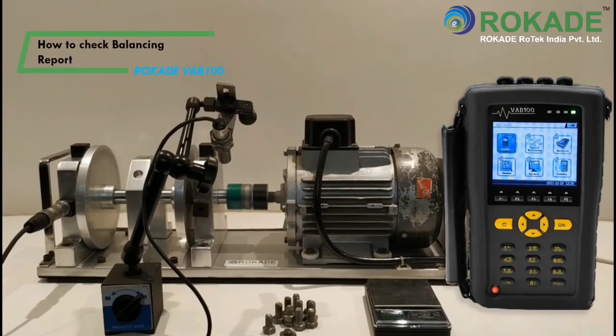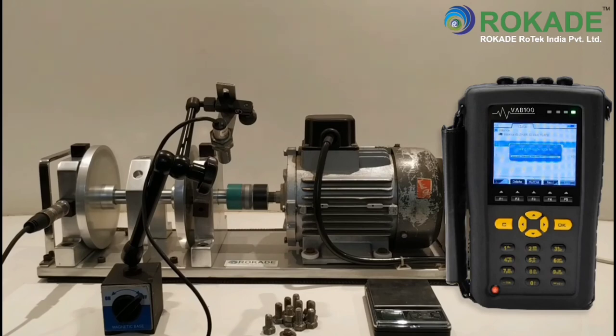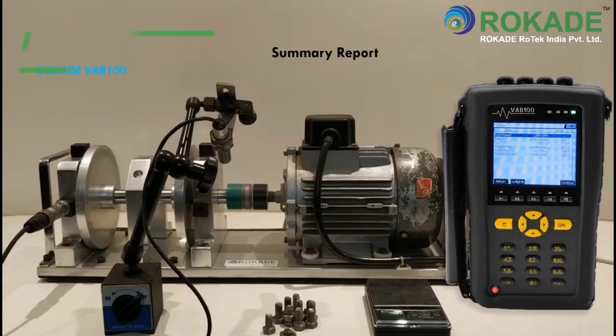How to check the balancing report. For checking the balancing report, go to main menu, then go to balancing. Select the report name and click on read. The entire summary report of balancing will now be displayed.